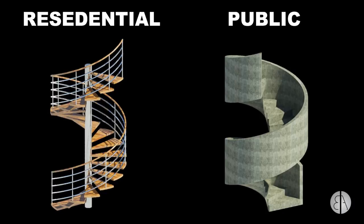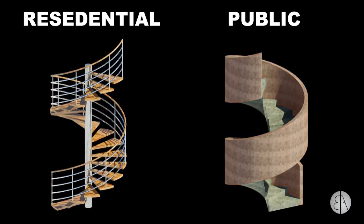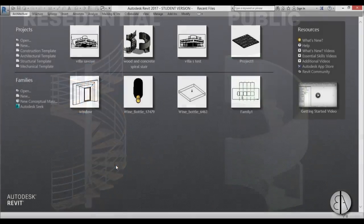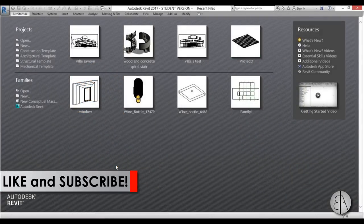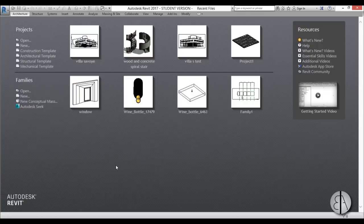Hey guys, this is the Balkan Architect and in today's tutorial I will be showing you how to create a spiral staircase in Revit. I will be doing two stairs. The first one will be a residential wood staircase that uses the center column as the main support, and the other one will be a public staircase made out of concrete where the support will be the outside concrete railing. Before I get started, please like this video and subscribe because I make videos like these every day. So let's get started.